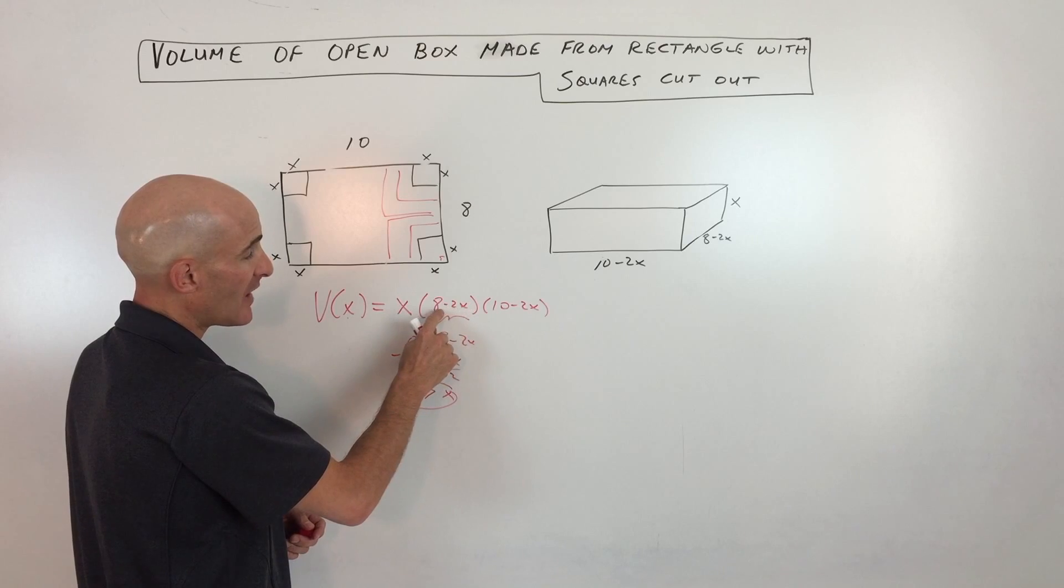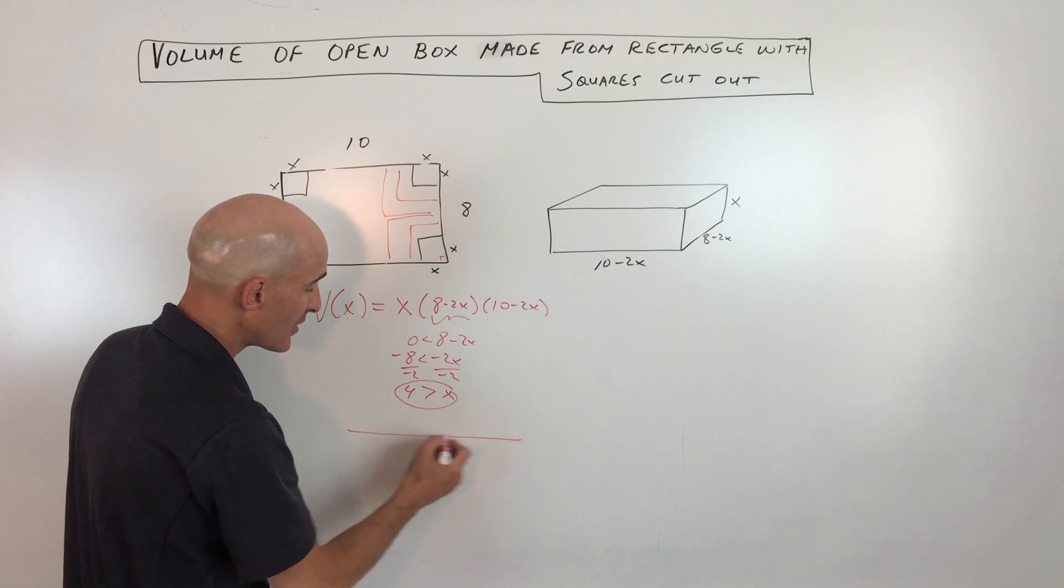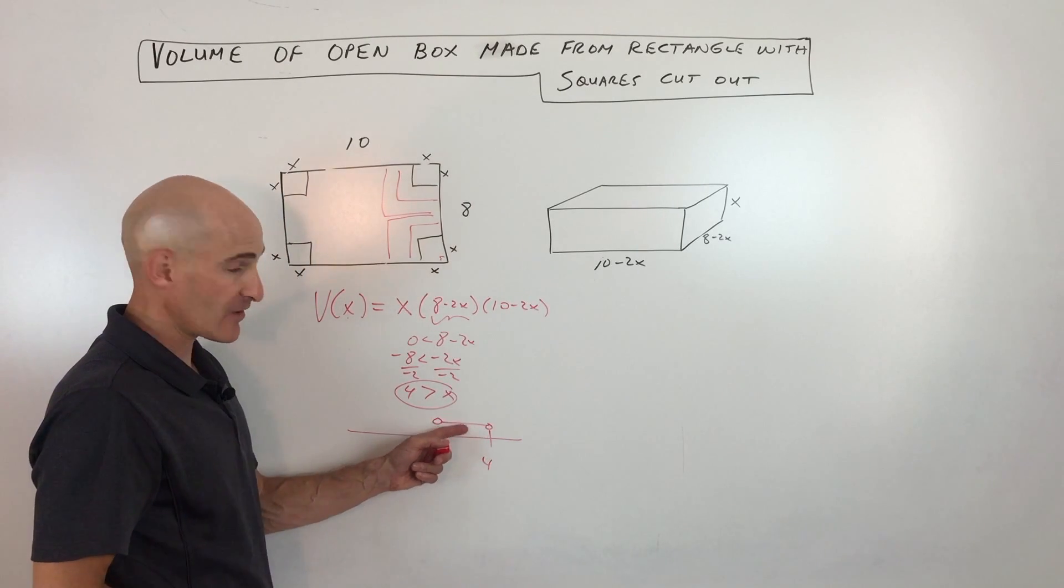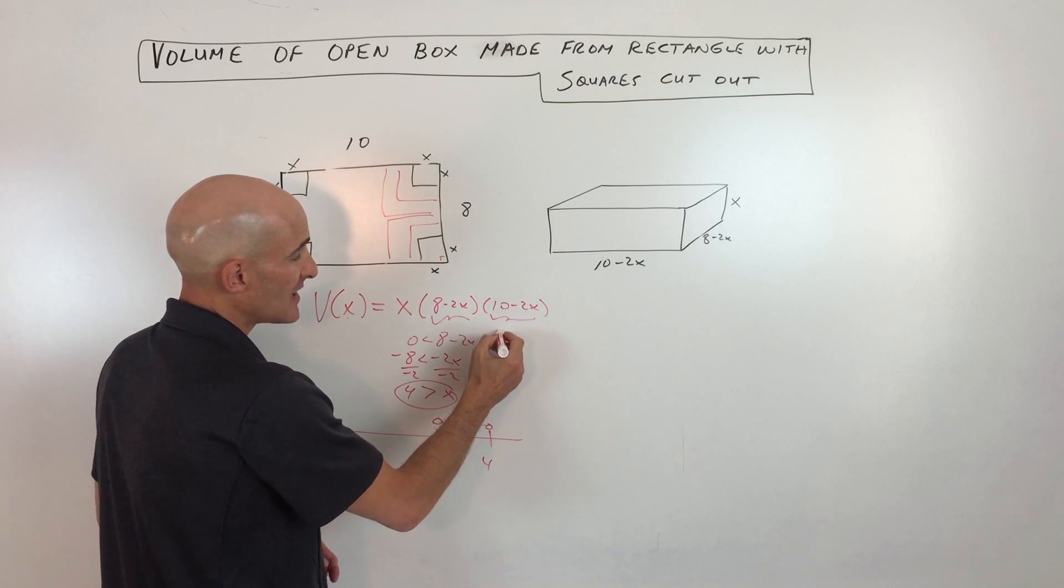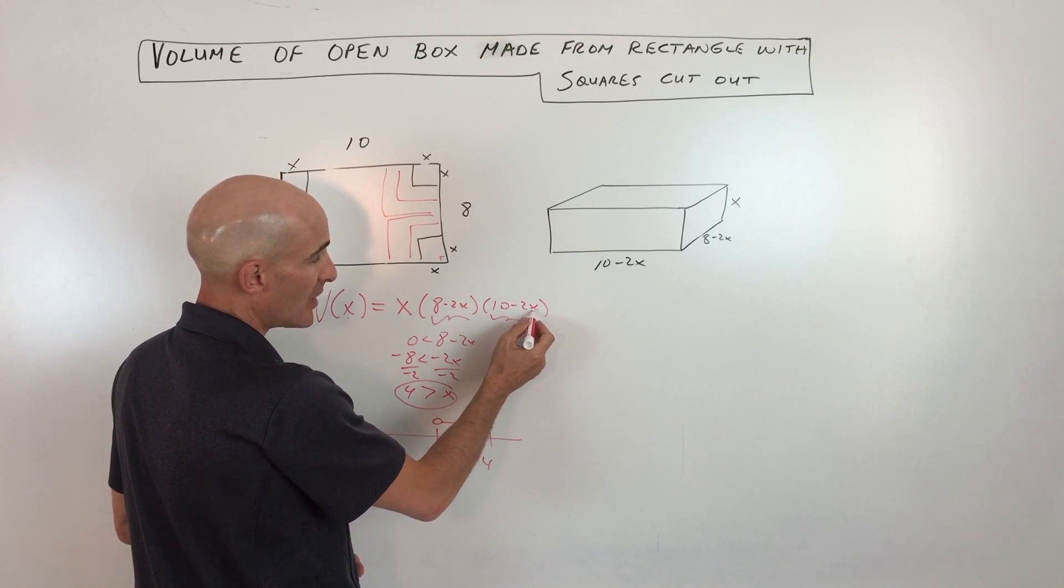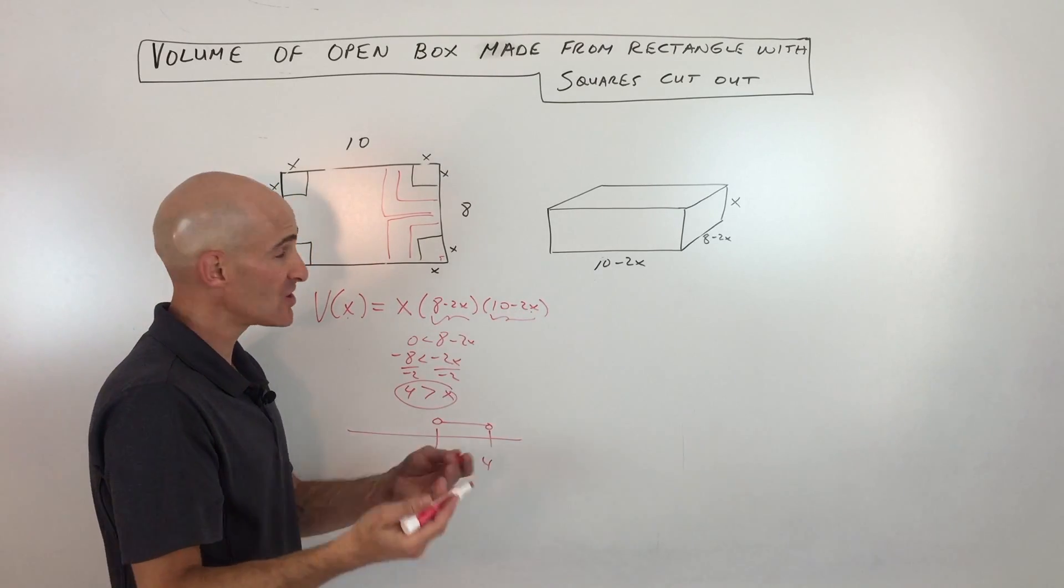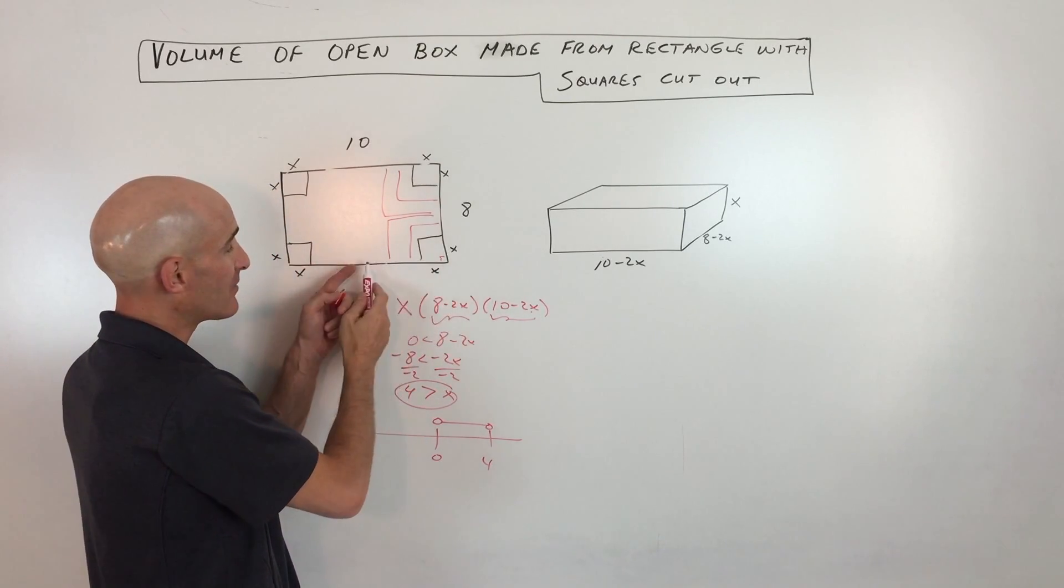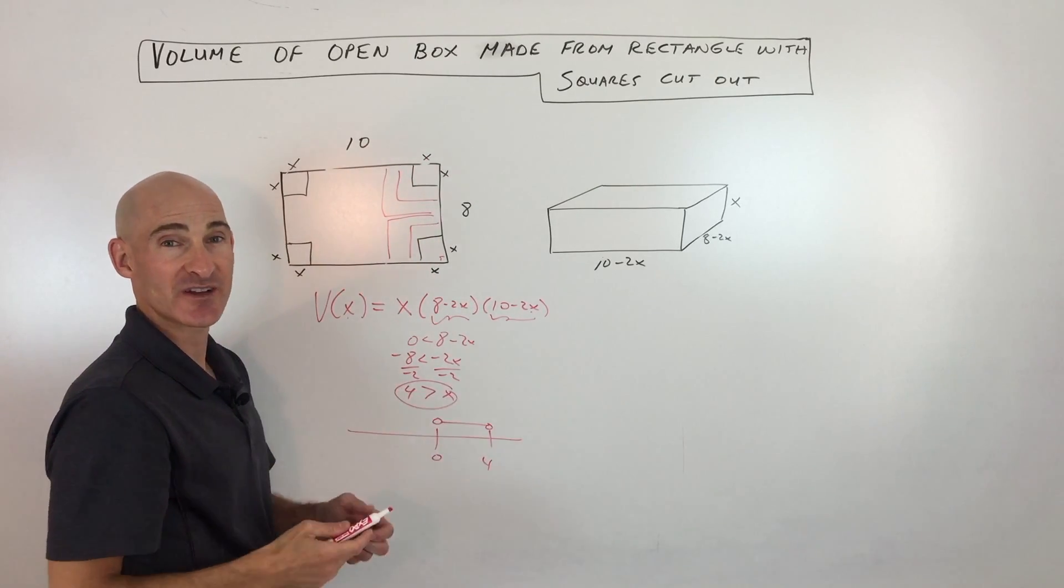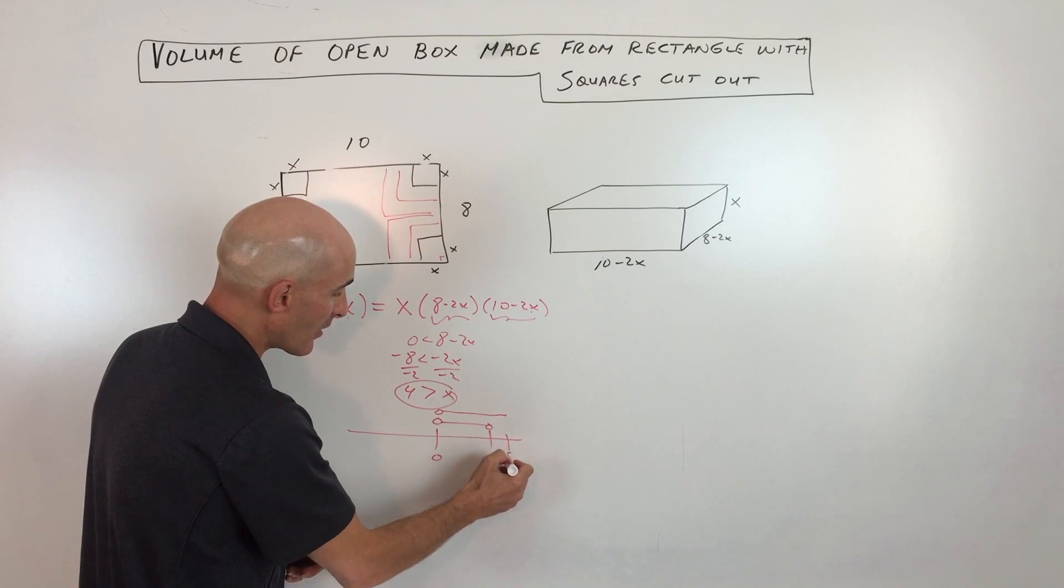If x was 5, we'd have 8 minus 10, which is a negative width, and we can't have a negative value. So basically if we graph this on the number line, here's 0, here's 4, x has to be greater than 0 but less than 4. When you look at the length, same thing. This here has to be greater than 0. So you can see that the greatest value that x can take on here is going to be 5. If it's 6, you're going to be into the negative range and we can't take more length than there is available here. So if we took these squares of side length 5 and 5, that would basically eliminate the rectangle altogether. So that means for this one, the x has to be between 0 and 5.